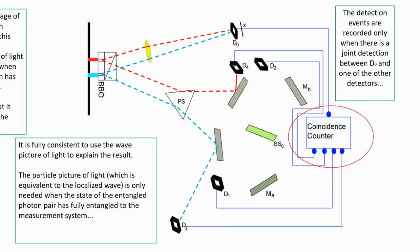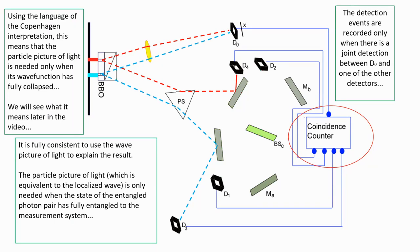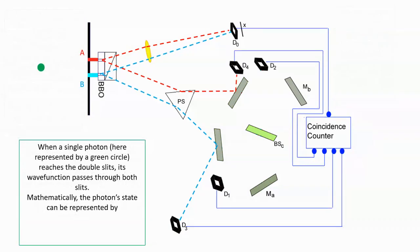Using the Copenhagen interpretation language, the particle picture is only needed when the wave function has fully collapsed. When a single photon is sent through the double slit, its wave function passes through both slits.